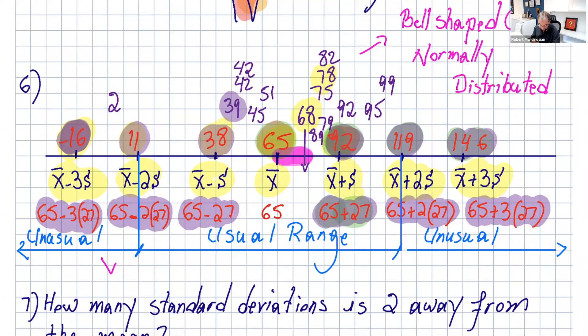If I place my numbers, you get these values. The first number was 2, between negative 16 and 11. Then we had 39, 42 couple of times, 45, 51. These numbers are all between 38 and 65. After the mean, we have all these numbers. I placed all 15 numbers on top of where they belong.